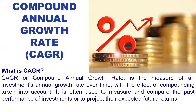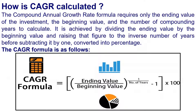Next, we come to what is CAGR. CAGR or Compound Annual Growth Rate is the measure of an investment's annual growth rate over time with the effect of compounding taken into account. It is often used to measure and compare the past performance of investments or to project their expected future returns. The CAGR formula requires only the ending value of the investment, the beginning value, and the number of compounding years to calculate. It is achieved by dividing the ending value by the beginning value, raising that figure to the inverse number of years, before subtracting it by 1 and converting it into percentage.